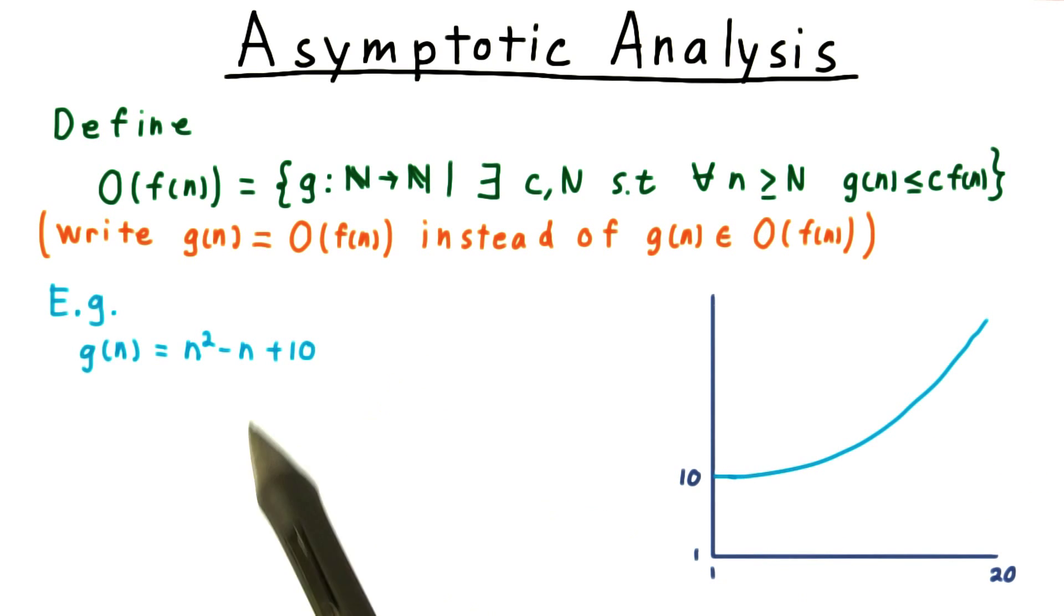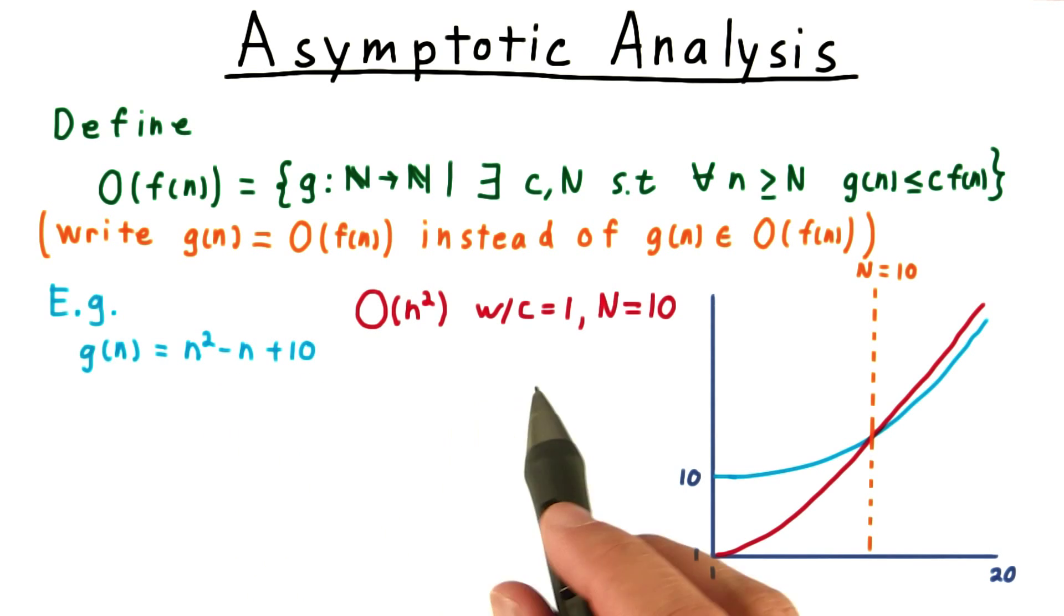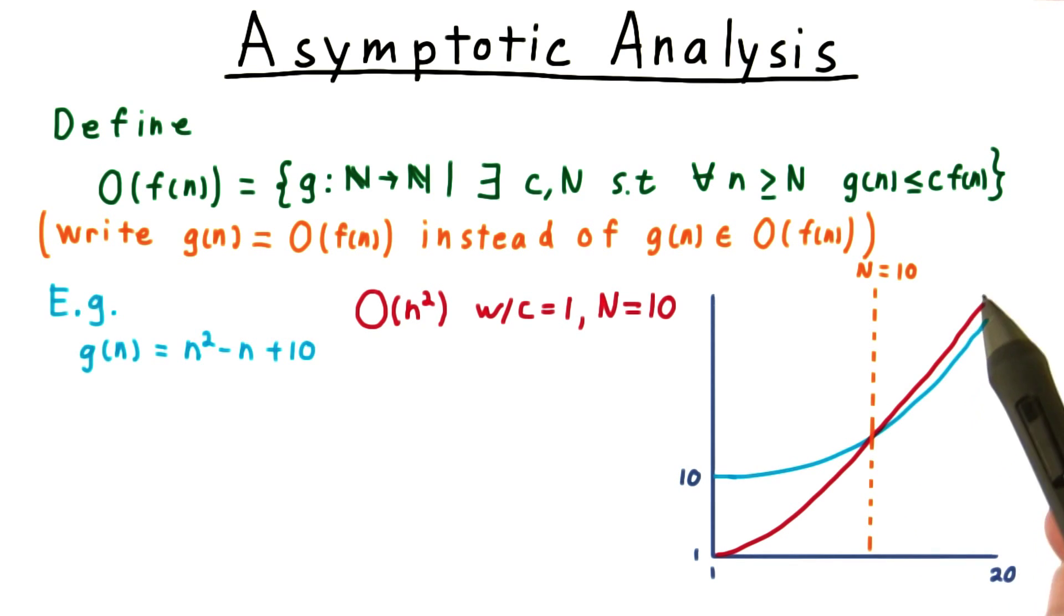An example also helps. Take this function g(n) = n² - n + 10. We can argue that this is order n² by choosing c = 1 and N = 10. For every n greater than 10, n² (this red line here) is bigger than the function g, the blue line.